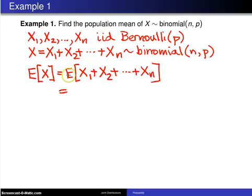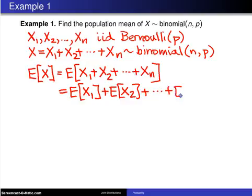Here is where we invoke the theorem from the previous page. The expected value of the sum is the sum of the expected values. So this is the expected value of X1 plus the expected value of X2 plus the expected value of Xn.